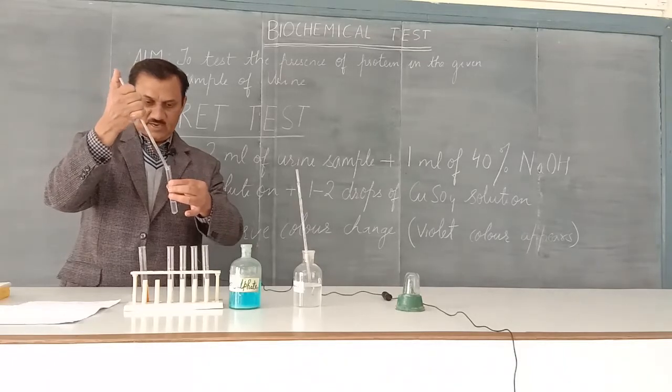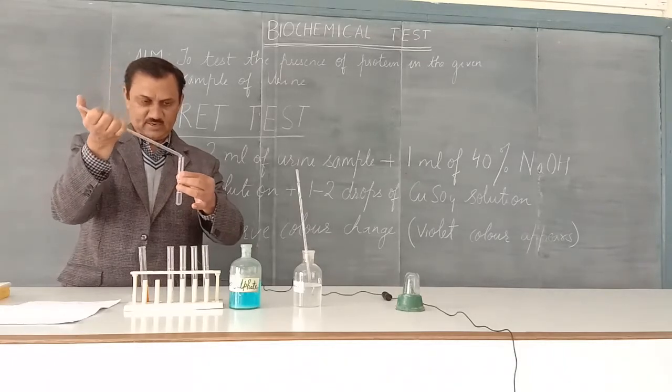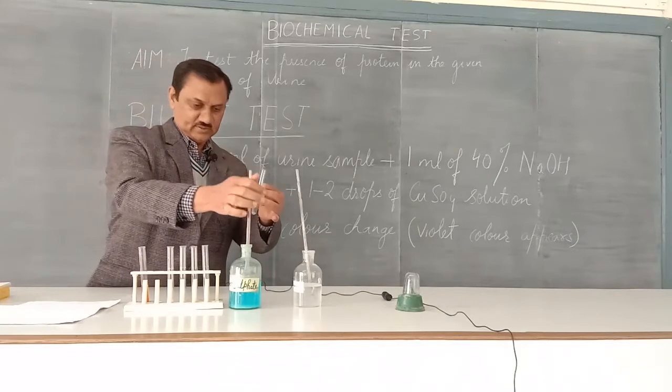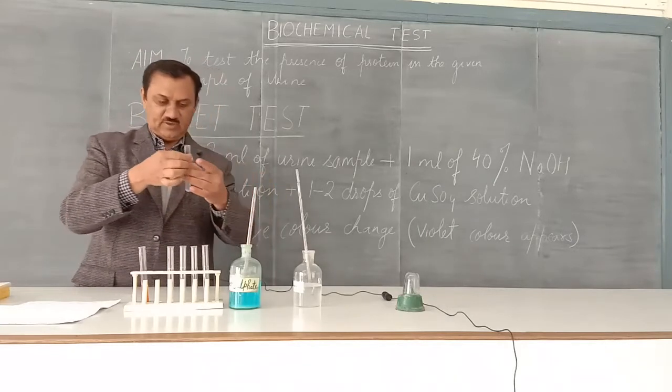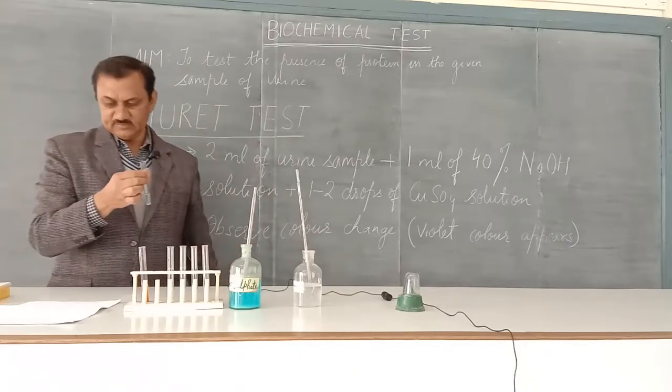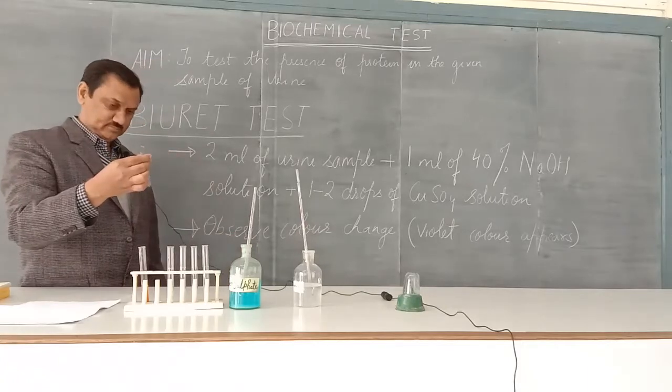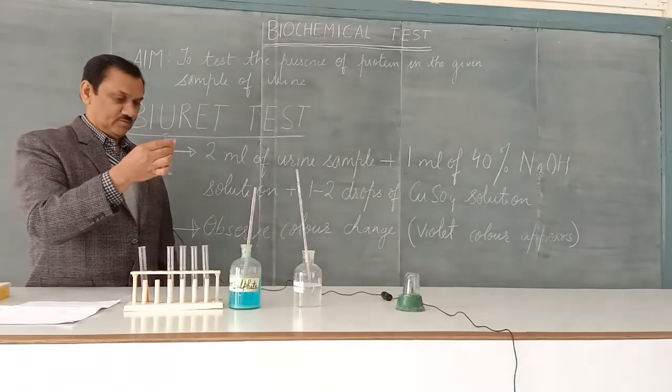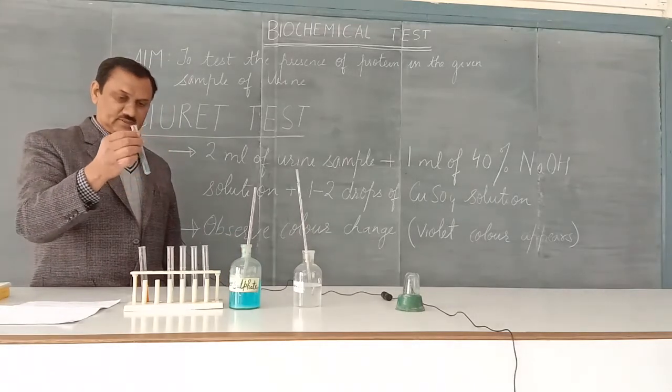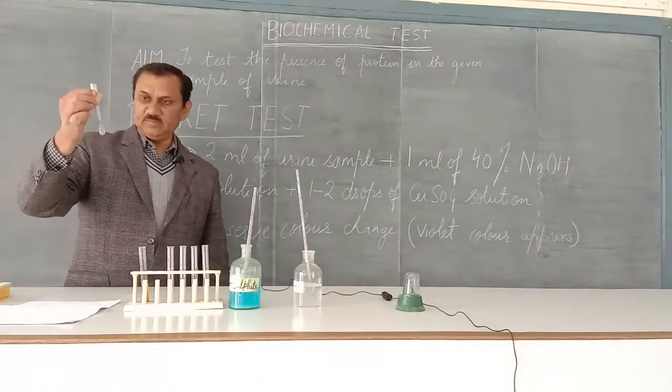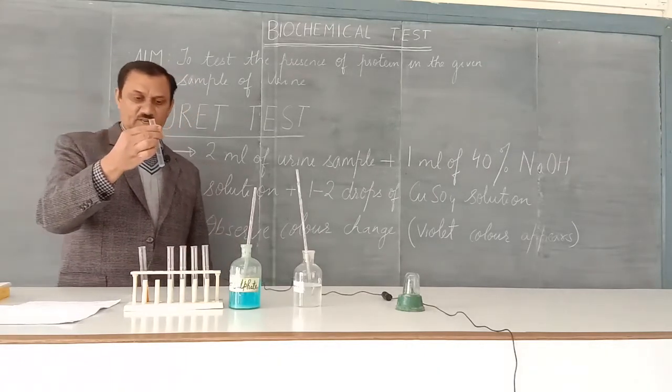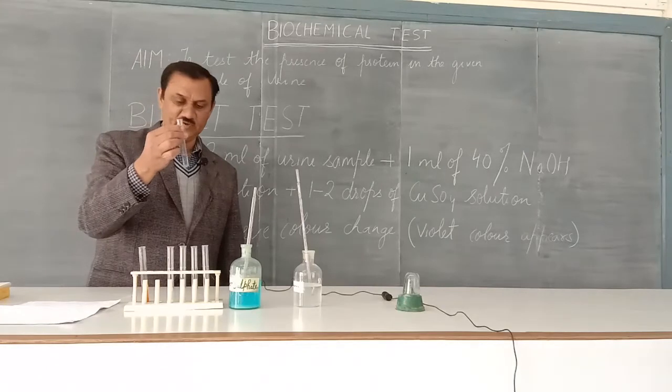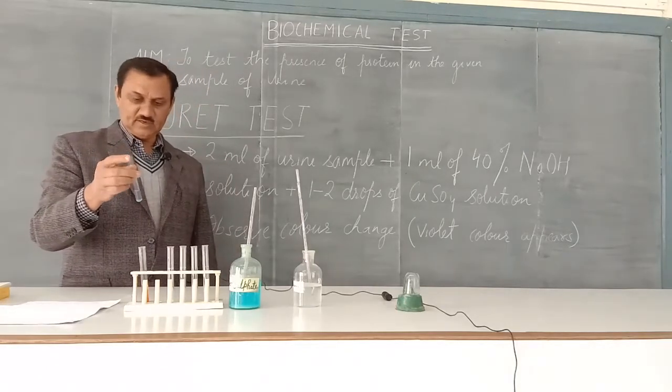By adding sodium hydroxide and copper sulfate, if the color turns violet, it indicates the presence of protein in the given sample of urine. It is the confirmed test.